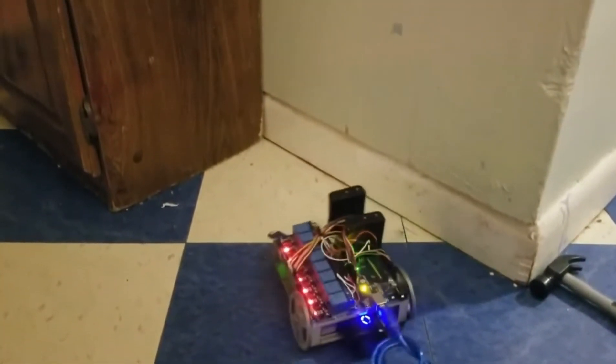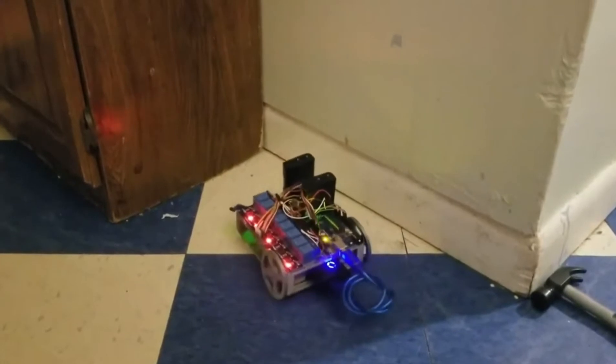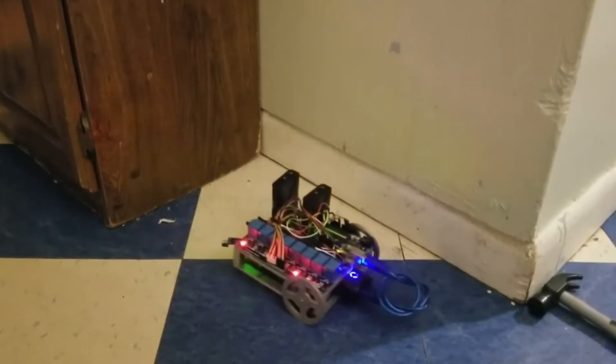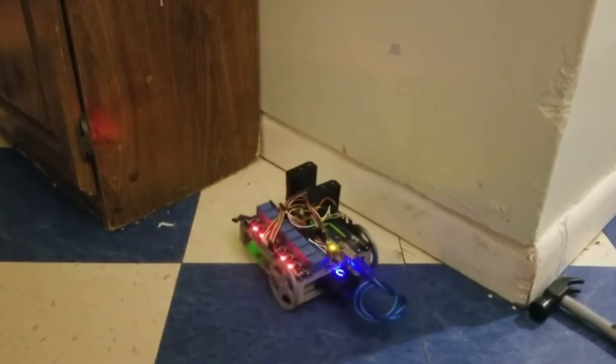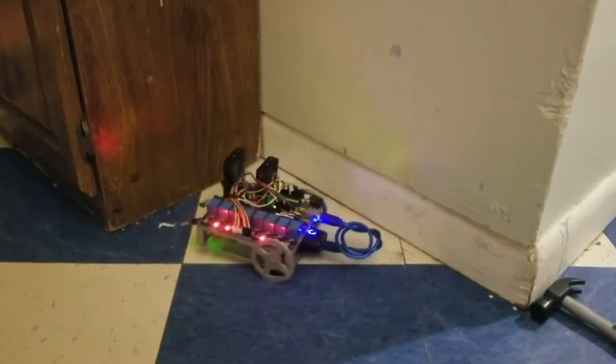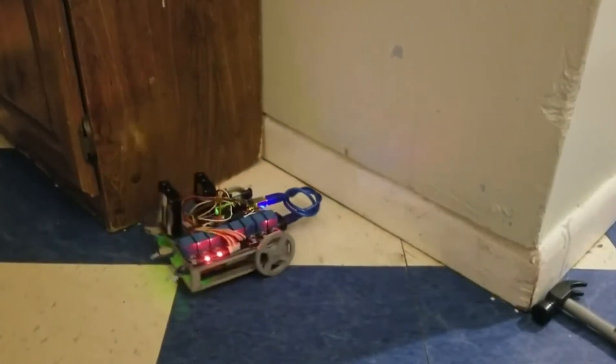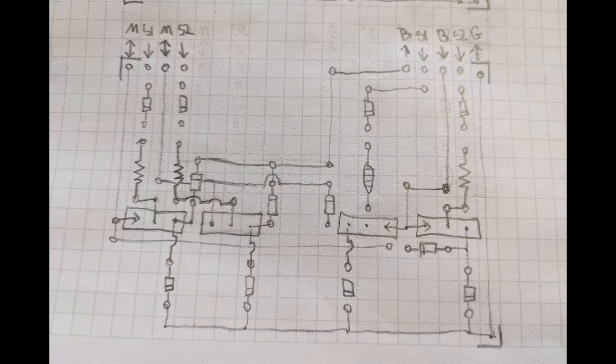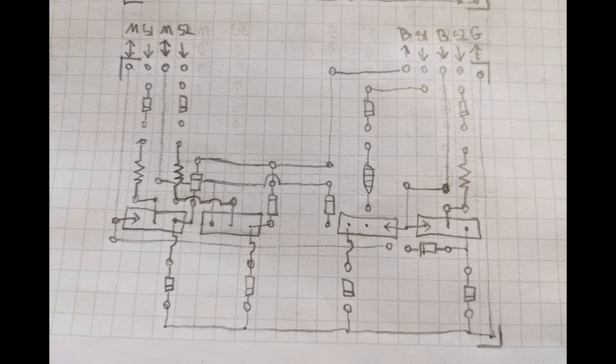This is our old obstacle avoidance bot. You can see on the top how I used relays to control the direction of two motors in the back. They take up too much room and make that loud clicking noise, so I got rid of them. I wanted something that didn't require its own power and made less noise.